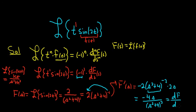So we just have to replace it in here. So negative and negative is positive, so we get 4s over s squared plus 4, quantity squared. And that would be the Laplace transform.